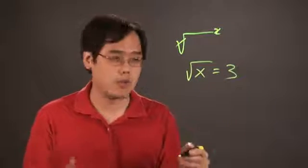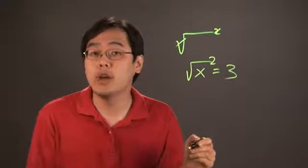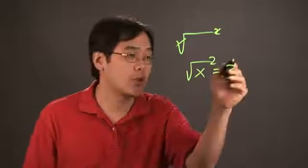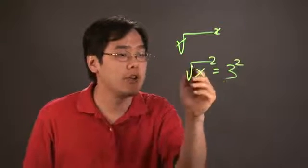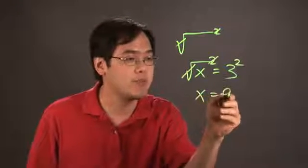To get rid of the square root, you want to square this side, but as you know, in any equation, to square one side, you have to square the other side as well. So the square and the square root cancel out. You have x equals 3 squared, which is 9.